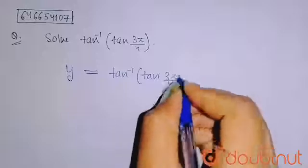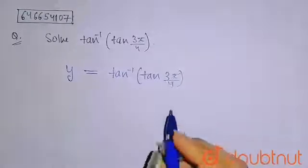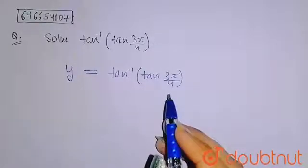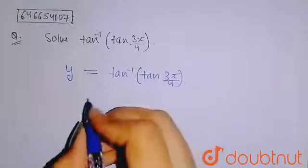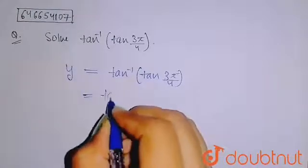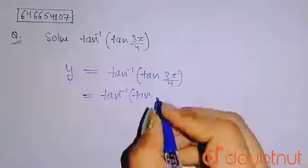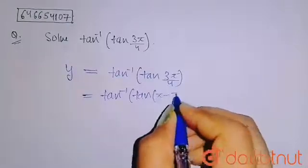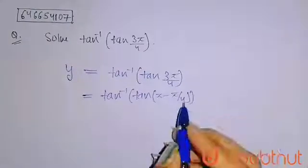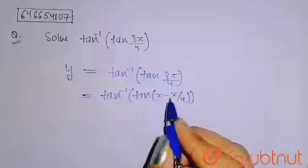Now, 3π by 4 we can simplify more so that we can easily understand what its value is. So here I will get tan inverse tan, now 3π by 4 can be written as π minus π by 4. When you take LCM, you will get 3π by 4 only.